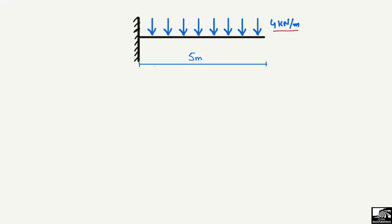The total length of the cantilever beam is given as 5 meters. This cantilever beam has only one support, which is a fixed support represented by point A. We need to find the support reaction RA and also the moment MA at this point. The horizontal reaction of this support will be equal to zero because there is no horizontal load acting on this beam.